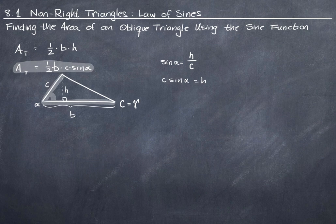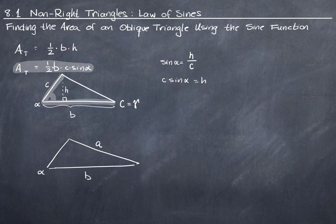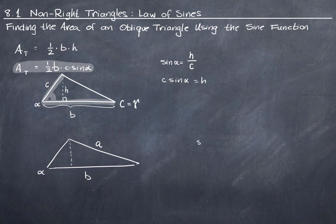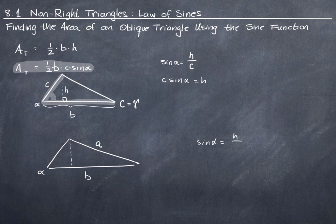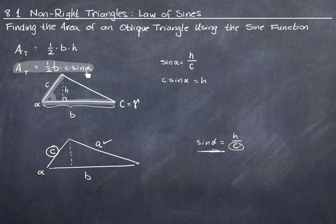If instead we had, for example, the length of the side b, the size of the angle alpha, and the length of the side a, that wouldn't give us the information we need to find the area directly, because now we have the sine of alpha is the height over c. If we don't know c, if we know a instead, we can't use this formula. We don't know c, so we can't find the sine of alpha, so we can't plug sine of alpha into our formula.